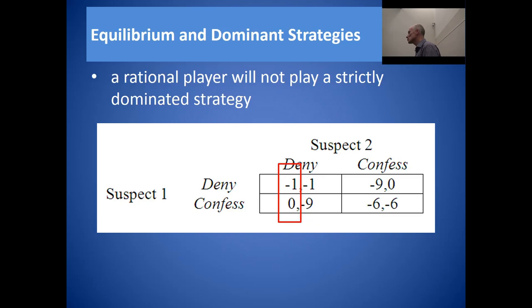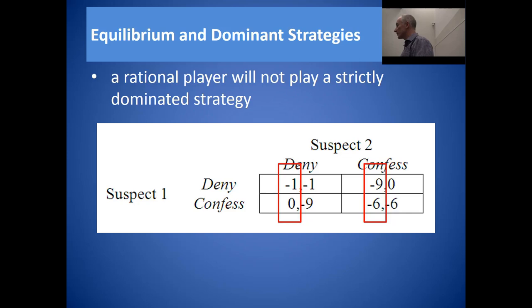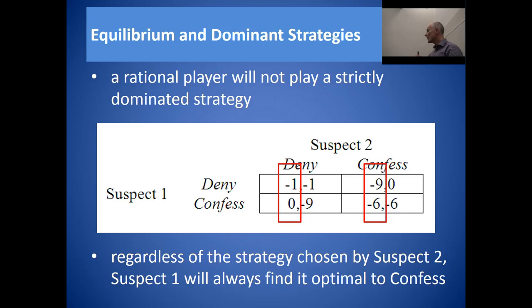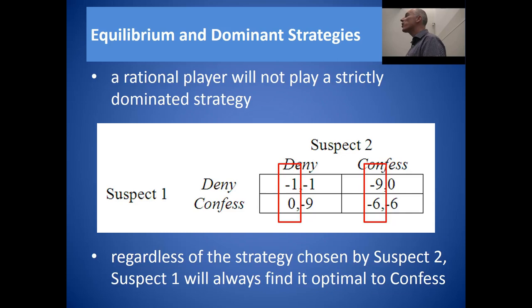What if suspect two chose to confess instead? Suspect one would argue through the same logic: if your rival is going to confess, do you want nine months in prison by choosing to deny, or six months by choosing to confess? Neither is particularly attractive, but given the choice, suspect one would prefer the lower sentence of six months — so he would choose to confess again. In both scenarios, regardless of what suspect two chooses, confess always gives a better payoff. Therefore, deny is strictly dominated by confess.